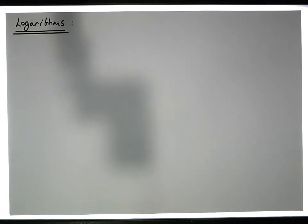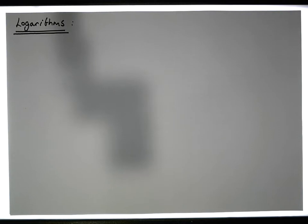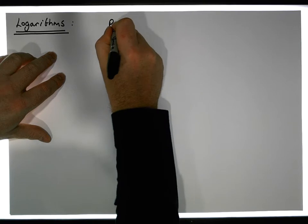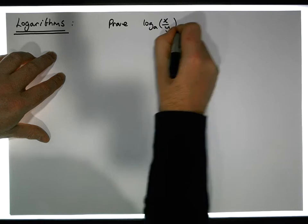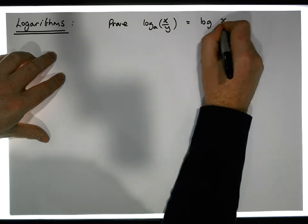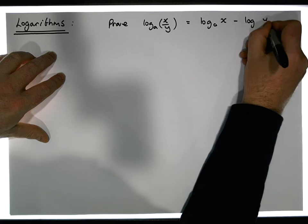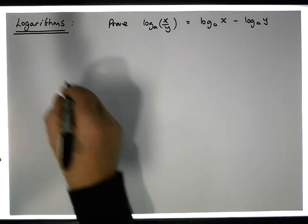Hi guys, this is Jonathan Lambert with the Mathematics Development and Support Service at the National College of Ireland. In this video, we'd like to present a proof that the log of a quotient to a particular base is equal to the difference between the log of the numerator and the log of the denominator. So we'd like to prove that log of x over y to the base a is the same as log of x to the base a minus log of y to the base a.